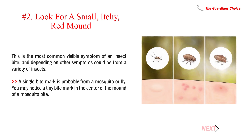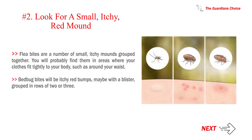Number 2: Look for a small, itchy, red mound. This is the most common visible symptom of an insect bite, and depending on other symptoms could be from a variety of insects. A single bite mark is probably from a mosquito or fly. You may notice a tiny bite mark in the center of the mound of a mosquito bite. Flea bites are a number of small, itchy mounds grouped together. You will probably find them in areas where your clothes fit tightly to your body, such as around your waist. Bed bug bites will be itchy red bumps, maybe with a blister, grouped in rows of two or three.